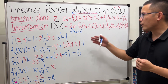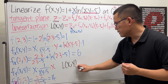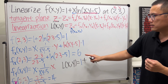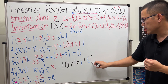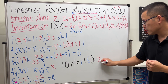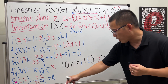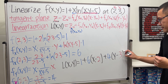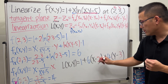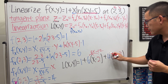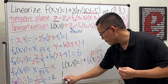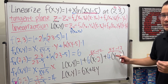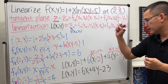Now we can plug everything into our formula: L(x, y) = 1 + 6(x − 2) + 4(y − 3). Expanding: 6x − 12 + 4y − 12 + 1. So L(x, y) = 6x + 4y − 23.